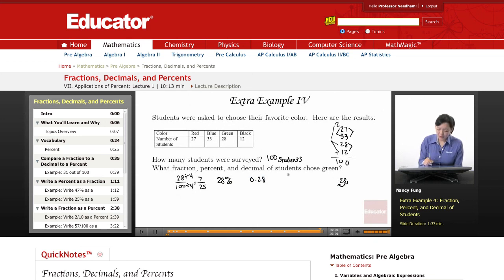So the fraction of students that chose green was seven over 25, the percent of students that chose green was 28%, and the decimal of students that chose green was 0.28.